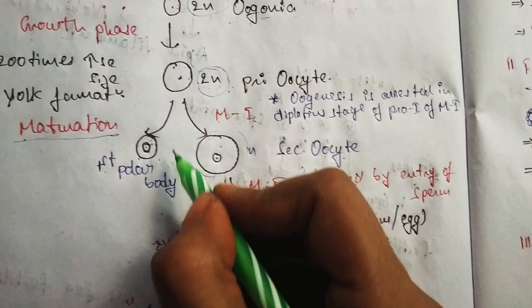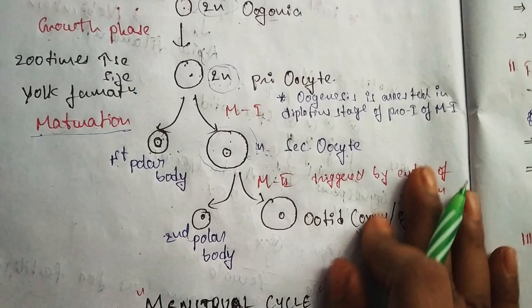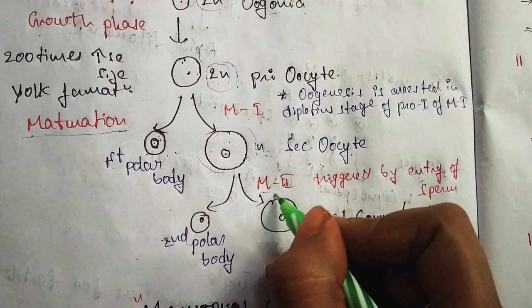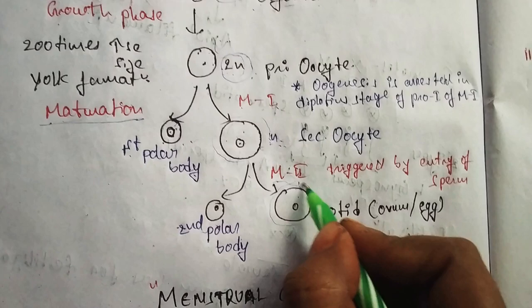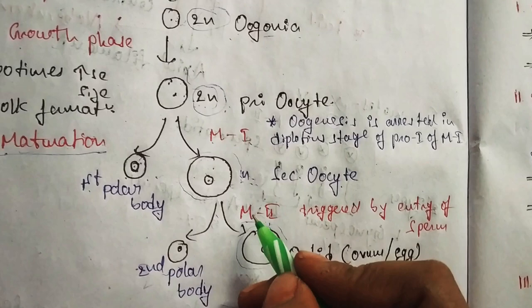Secondary oocytes contain haploid chromosomes — a single set of chromosomes. After formation of secondary oocytes, they again undergo meiotic division 2. In meiotic division 2, a second polar body is formed and one large cell is produced, which is the ootid, or ovum, or egg.